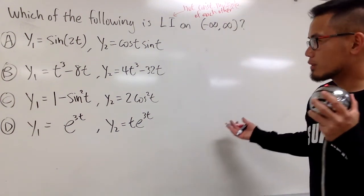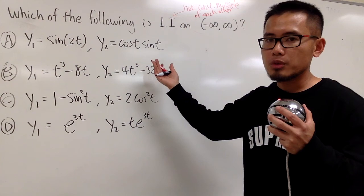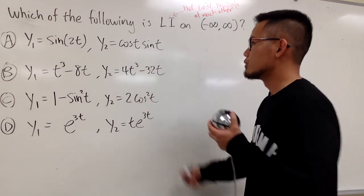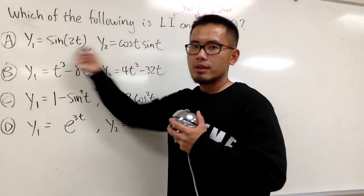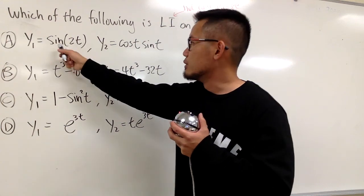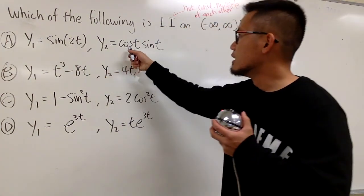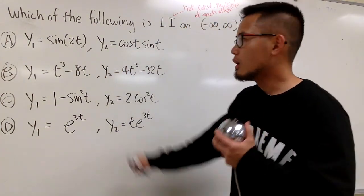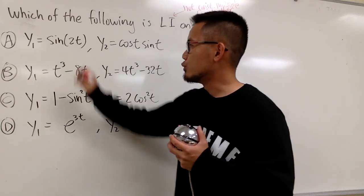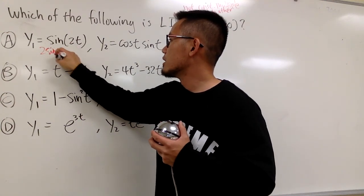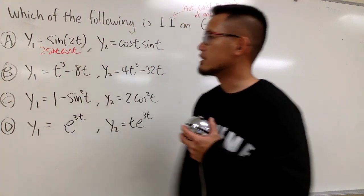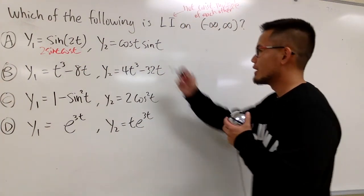So what we are going to do is show you if they are constant multiples of each other or not. I will go through the list. First one, this is what we have. You see this is sine of 2t and this is cosine t sine t. I have a double angle here. I can rewrite this as 2 sine t times cosine t. And you notice this right away.